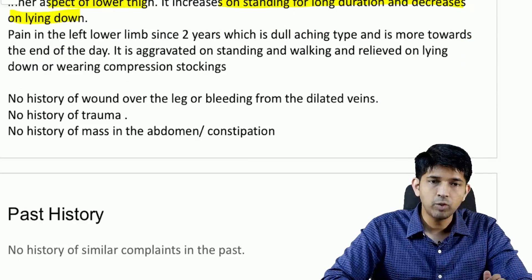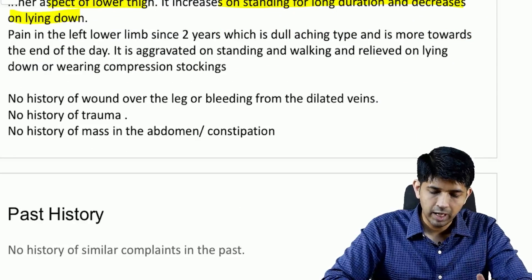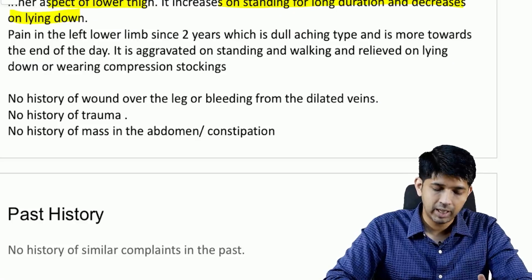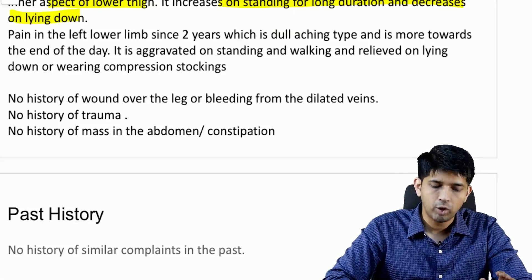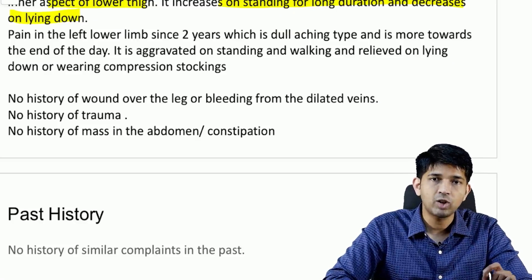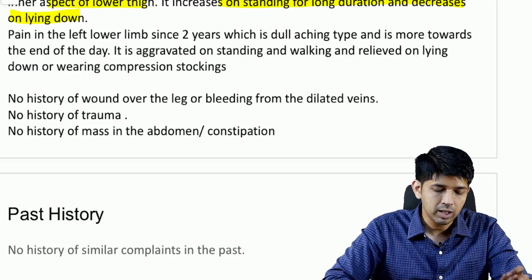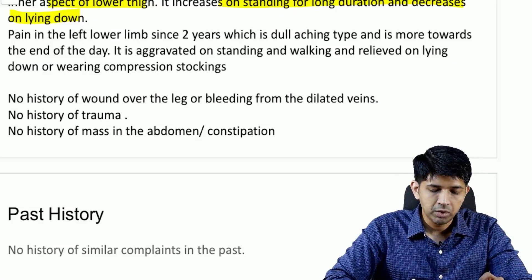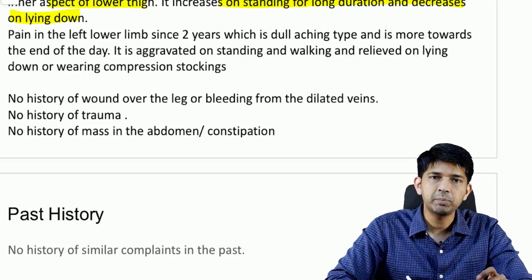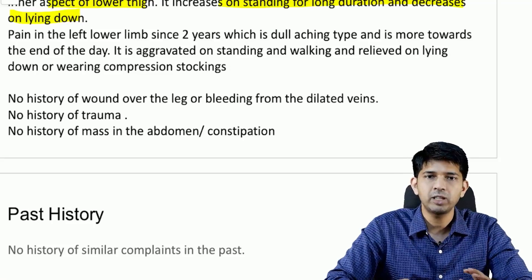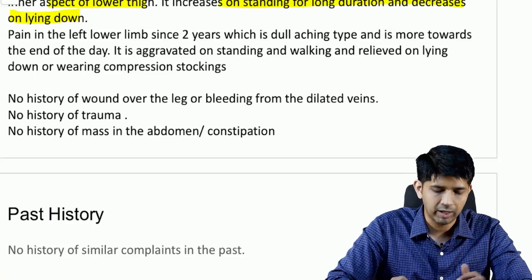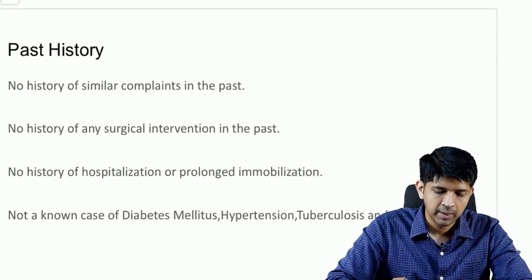There is no history of wound over the leg or bleeding from the dilated veins, and no history of trauma — so it is not an AV fistula. There is no history of a mass in the abdomen or chronic constipation, which helps rule out secondary varicose veins.